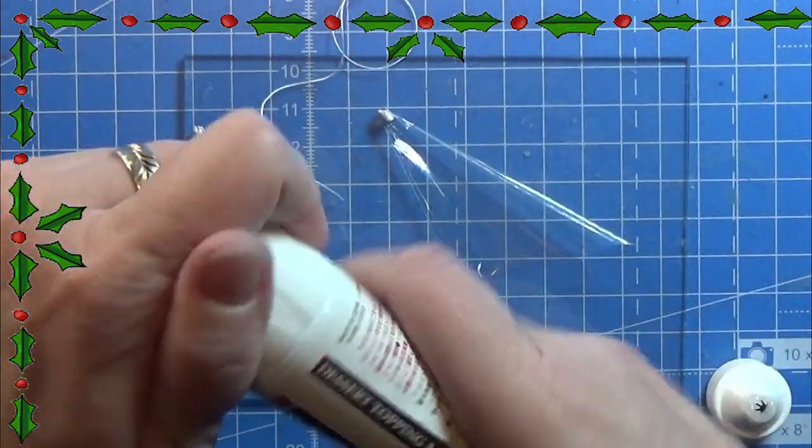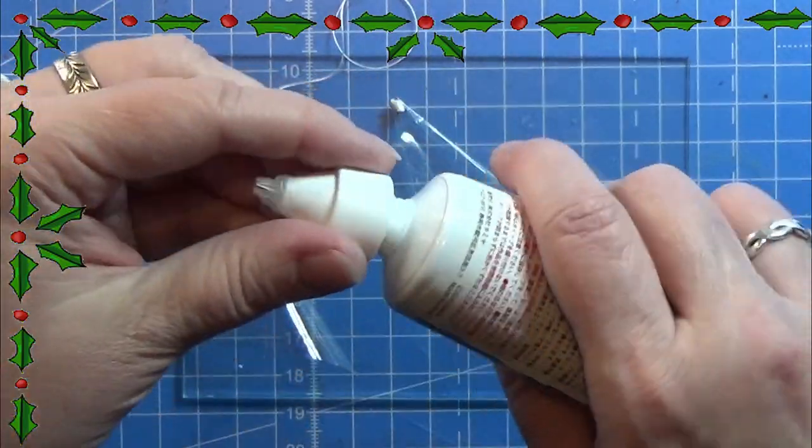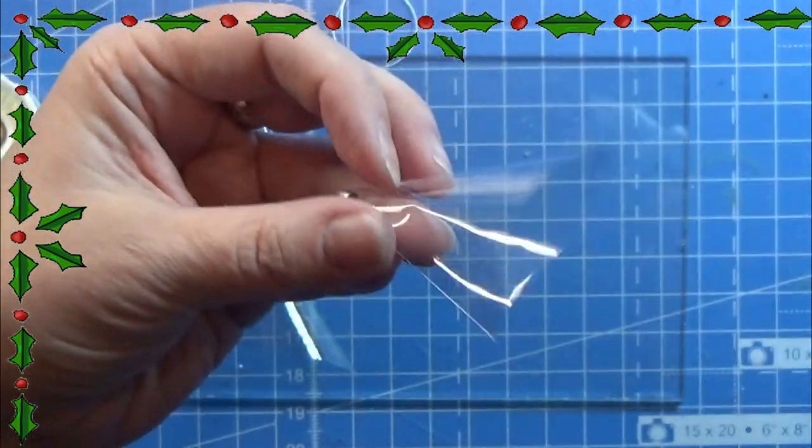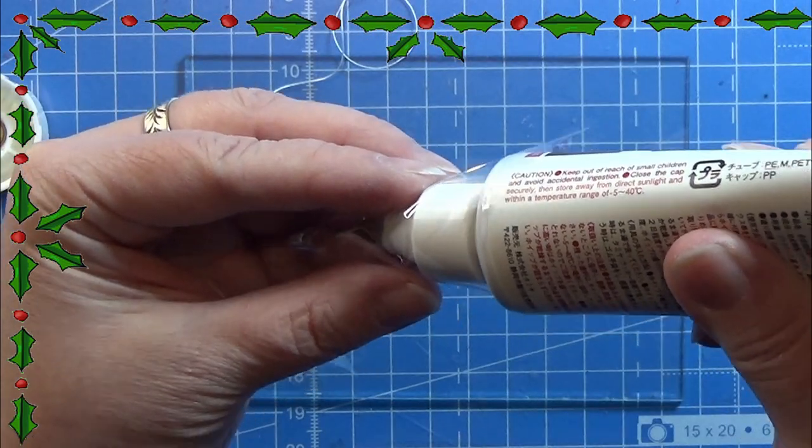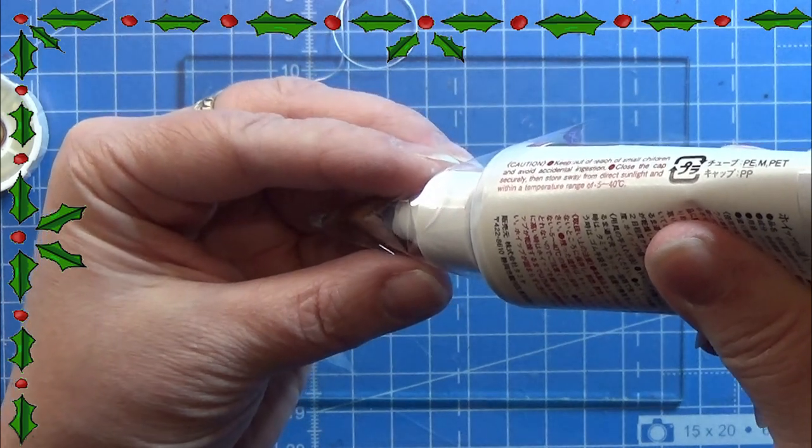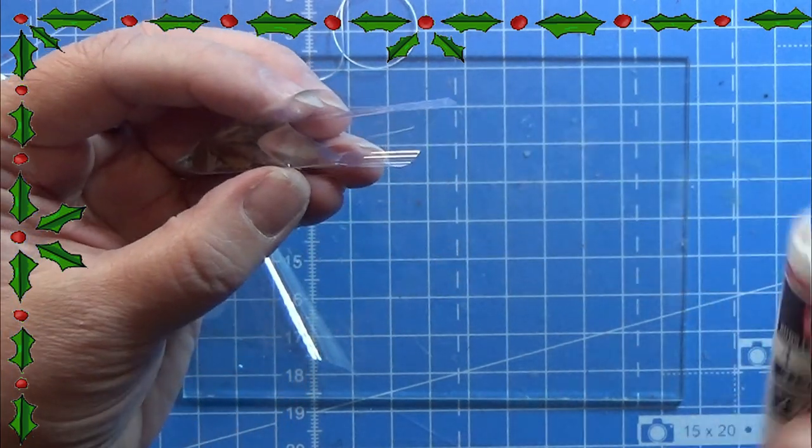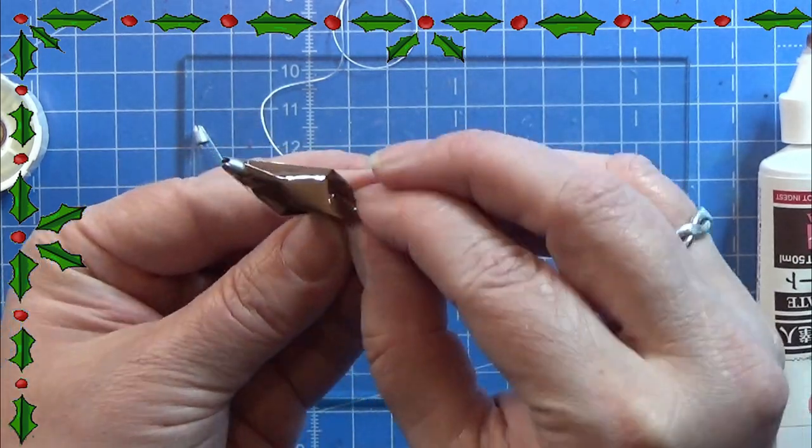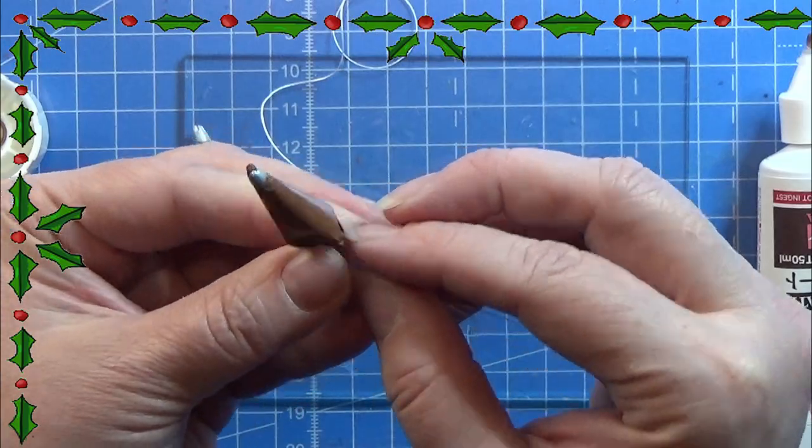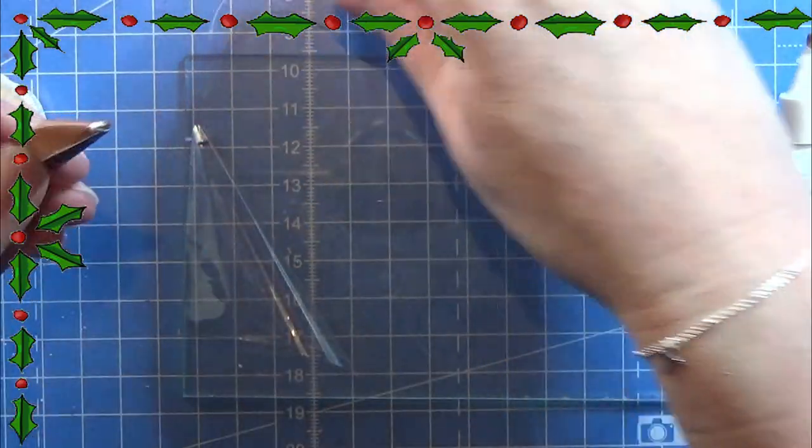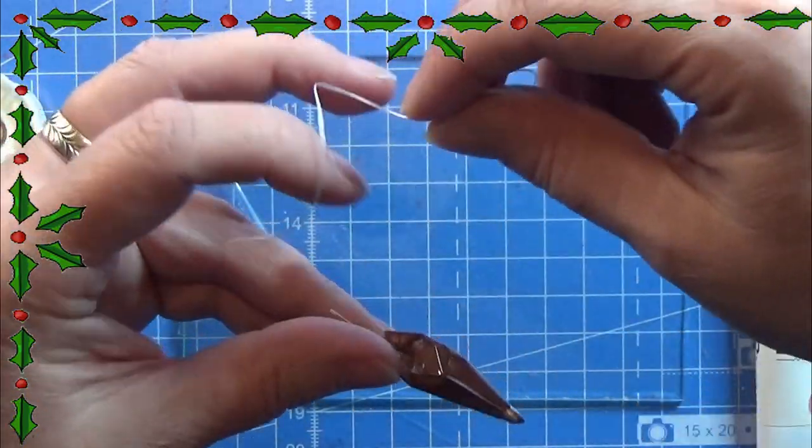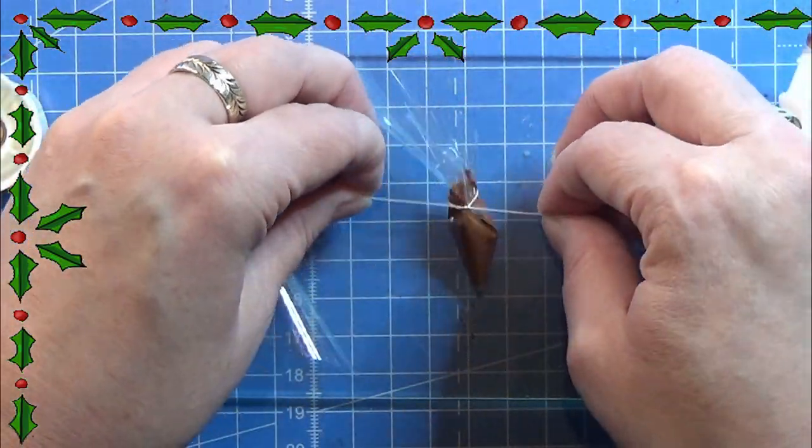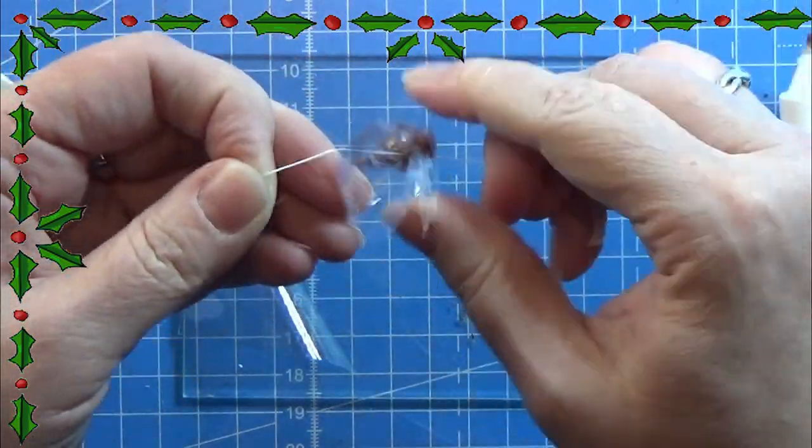I am taking a tiny bit of a sewing thread and then some of this dessert topping master. Here I have the brown one, and I am just going down into the bag and filling up the bag until I have the size that I want it to. Then folding it really nice together here at the top and squeezing a bit of the dessert topping master out of the end of it, and then making a knot with a little piece of sewing thread. Leave it to dry.